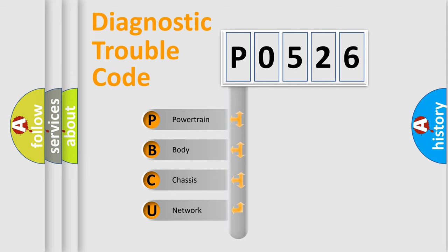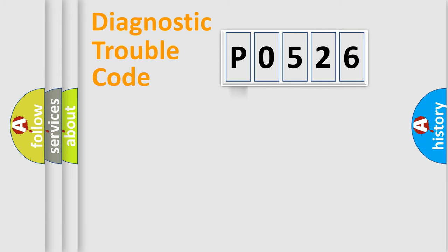We divide the electric system of automobiles into four basic units: Powertrain, Body, Chassis, and Network. This distribution is defined in the first character code.